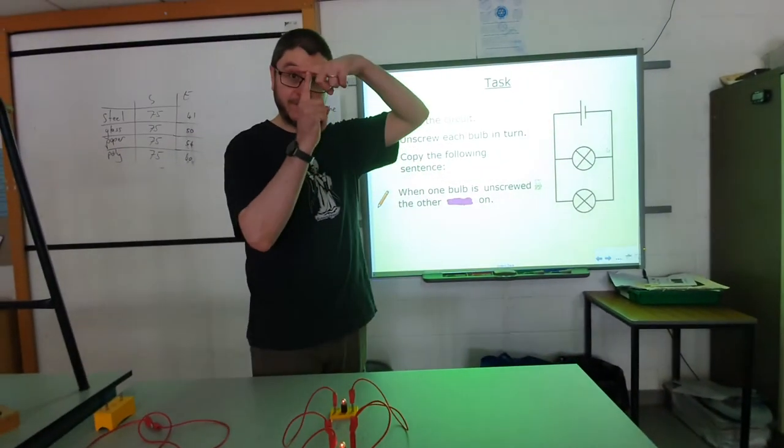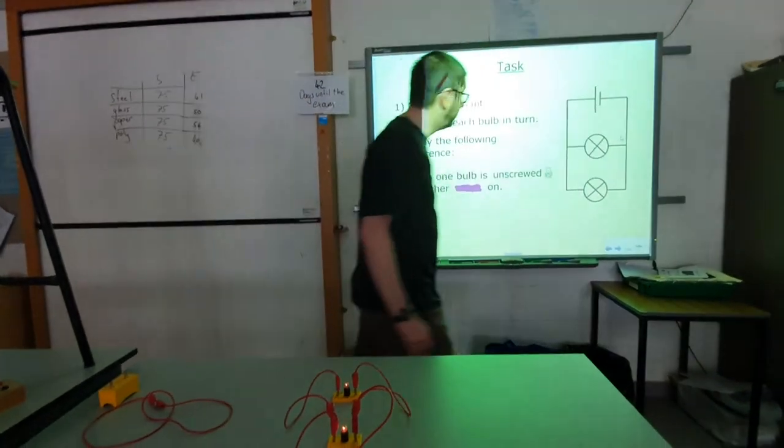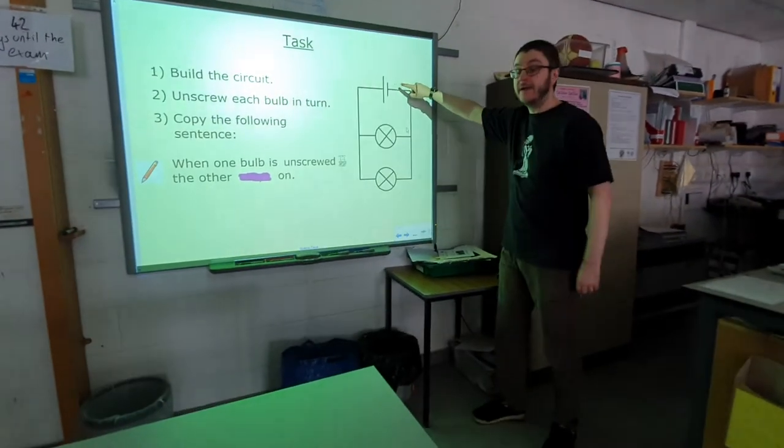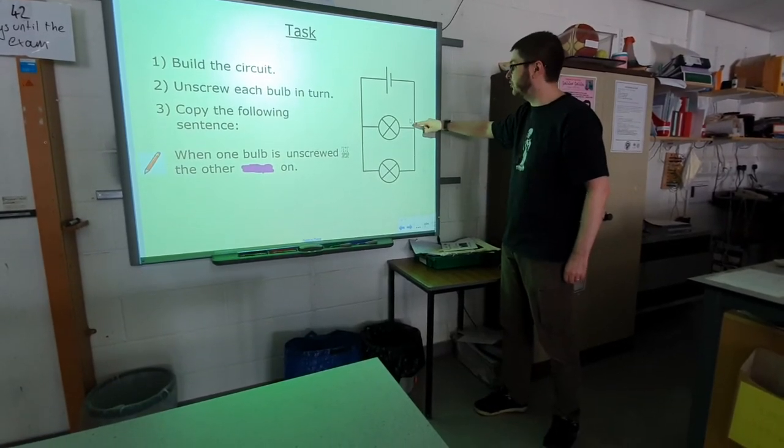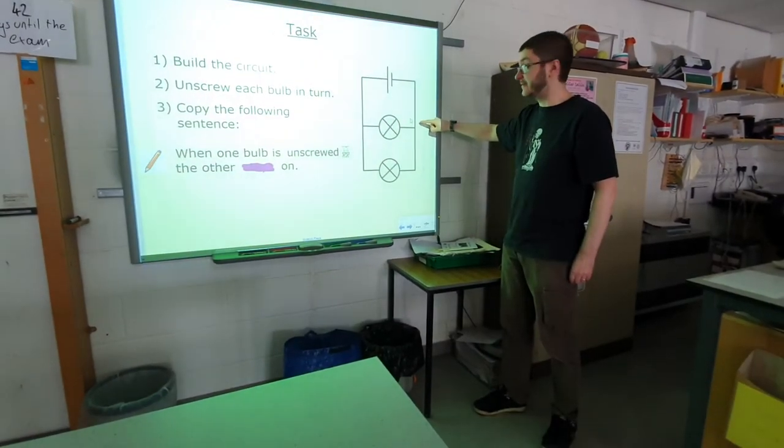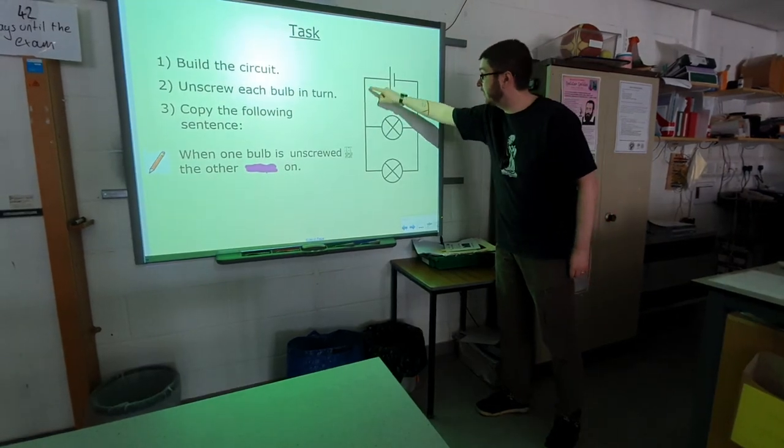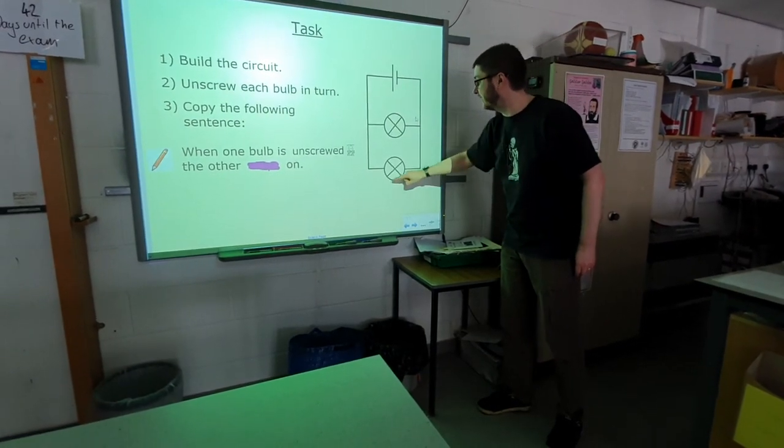So in a parallel circuit, when the current gets to a junction, it splits up. You've got your current coming out of the circuit, coming around here and getting to this little junction point, and what it does is split up. Some of it goes down this way and comes back, and some of it goes down this way and comes back.